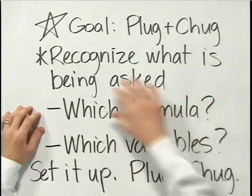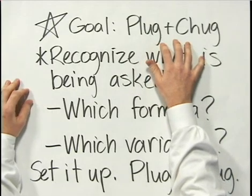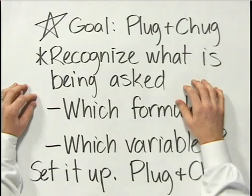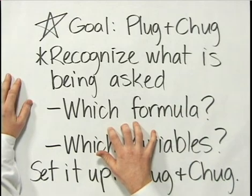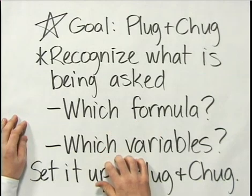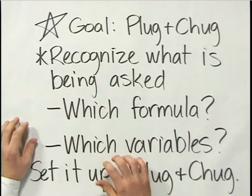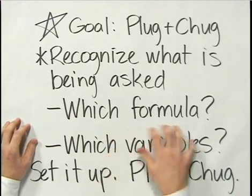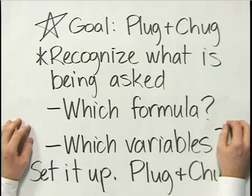The goal in applying these rules is to get to what I call a plug and chug problem. Our goal is to turn every problem you encounter from a confusing word problem into a straight plug and chug problem. That means first you recognize what is being asked of you — which formula does the question refer to, which formula am I going to need to apply? Sometimes it might be several formulas. The second thing is: which variables in that formula am I being asked to calculate or solve for? The first step is always to recognize what is being asked, and that means knowing those formulas and knowing the variables in them.